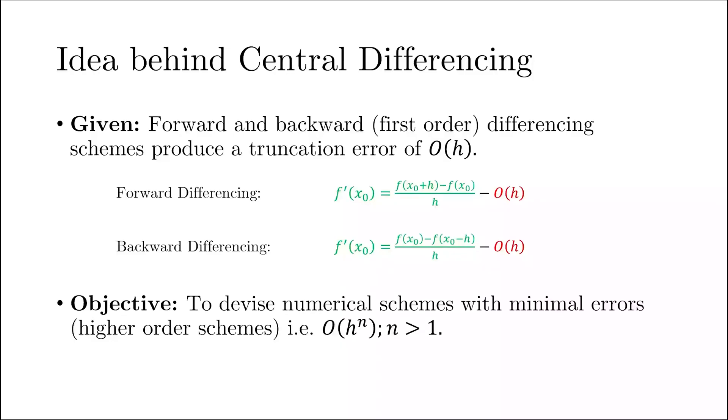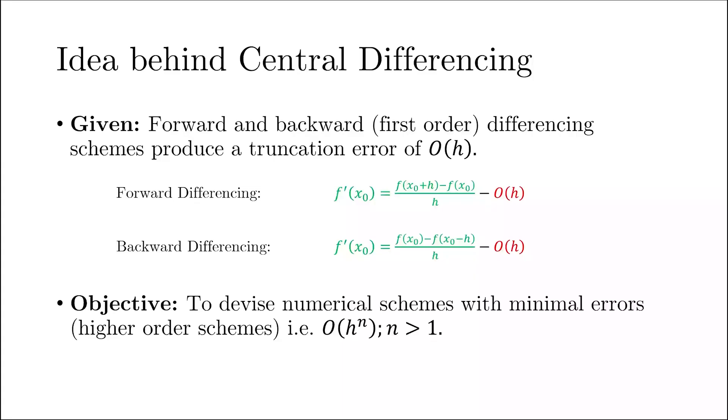Now we want to look for higher order accurate schemes. First order accurate means less accurate than higher order accurate schemes. Given that forward and backward differencing produce a truncation error of order h, can we devise a numerical scheme that gives a truncation error of order h raised to power n, where n is larger than one — for example n equals 2 or 2.5? Let's try.